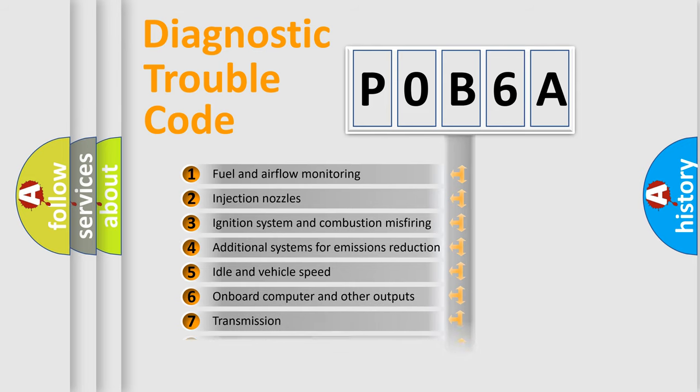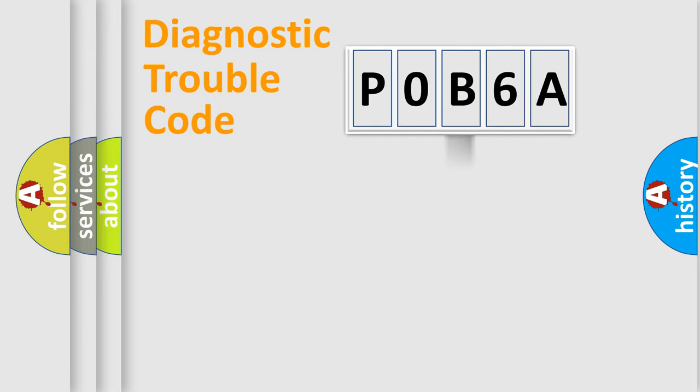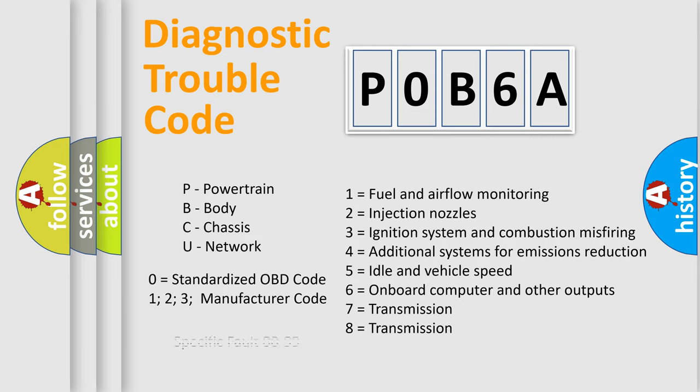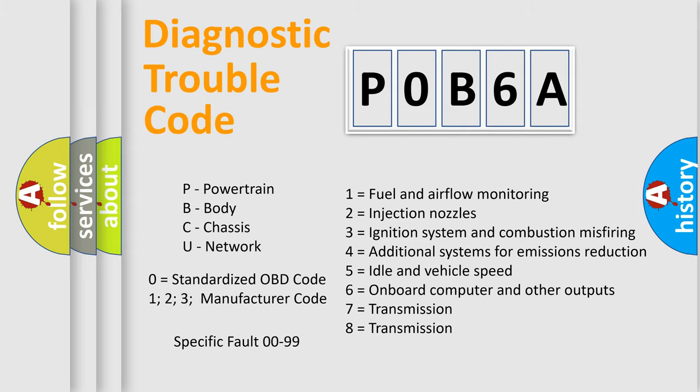The distribution shown is valid only for the standardized DTC code. Only the last two characters define the specific fault of the group. Let's not forget that such a division is valid only if the second character code is expressed by the number zero.